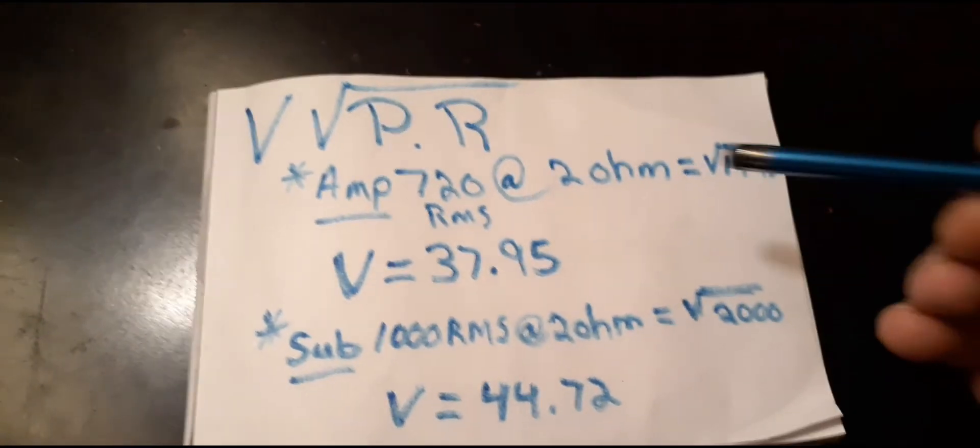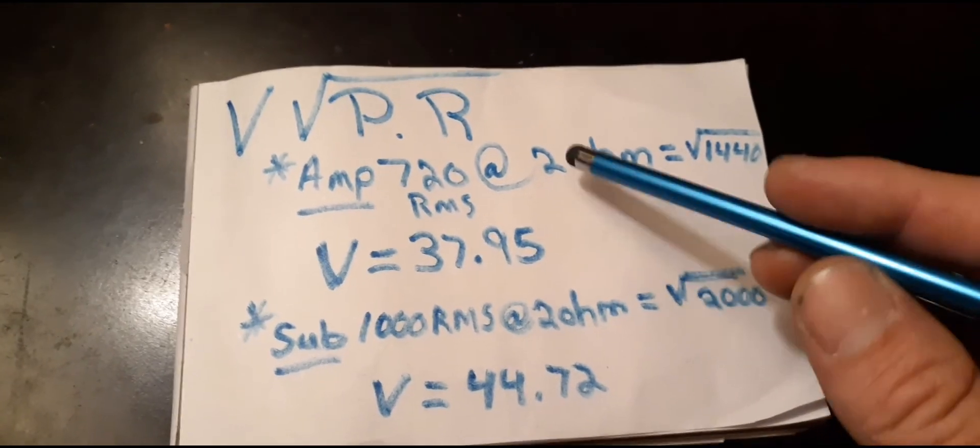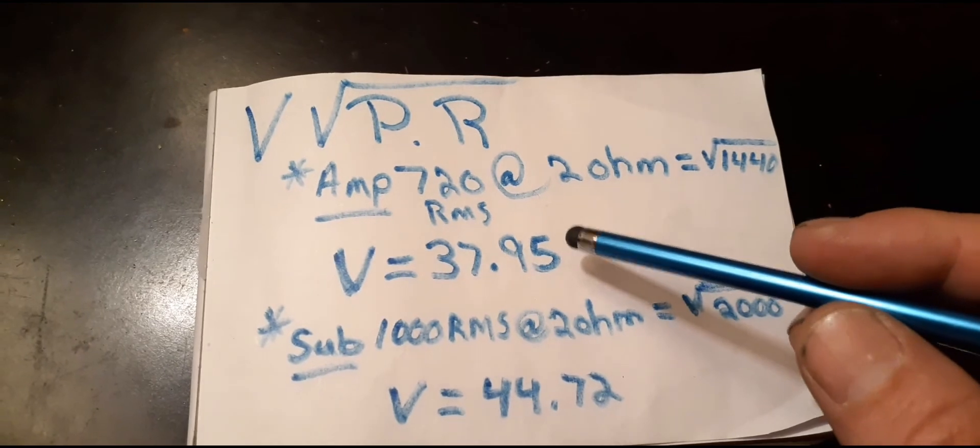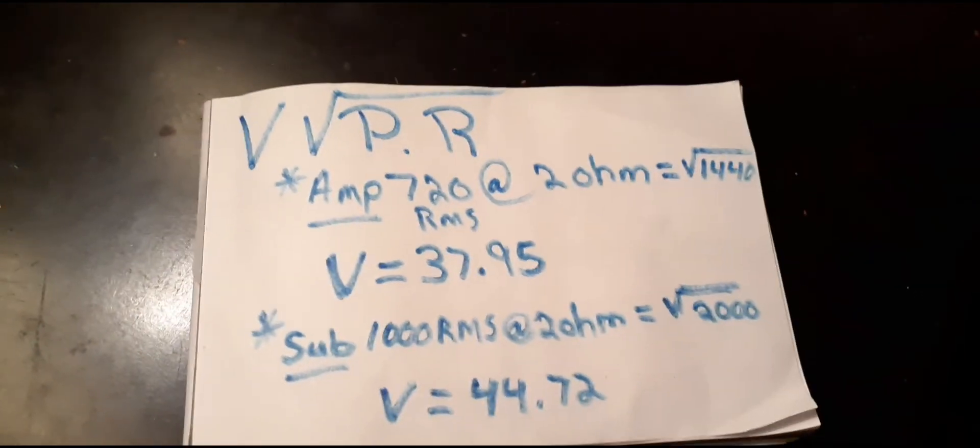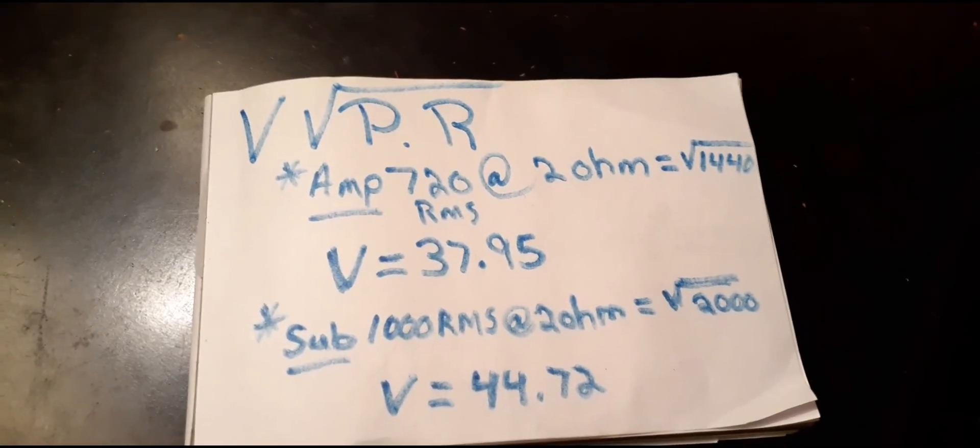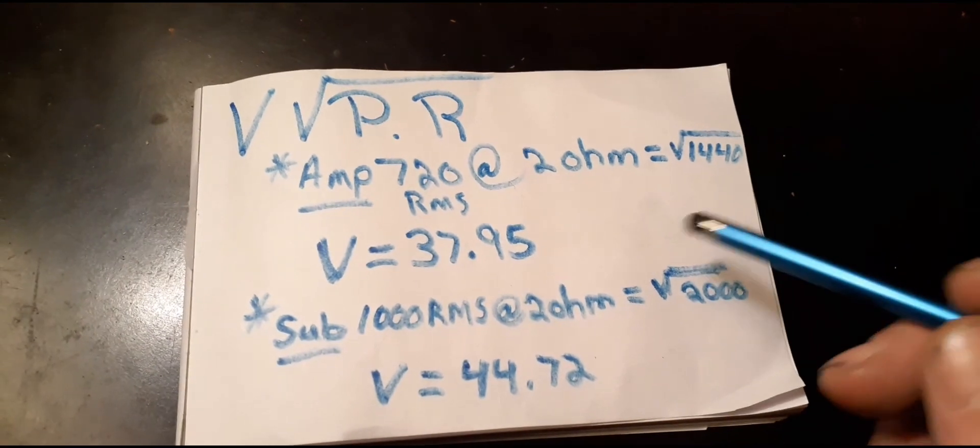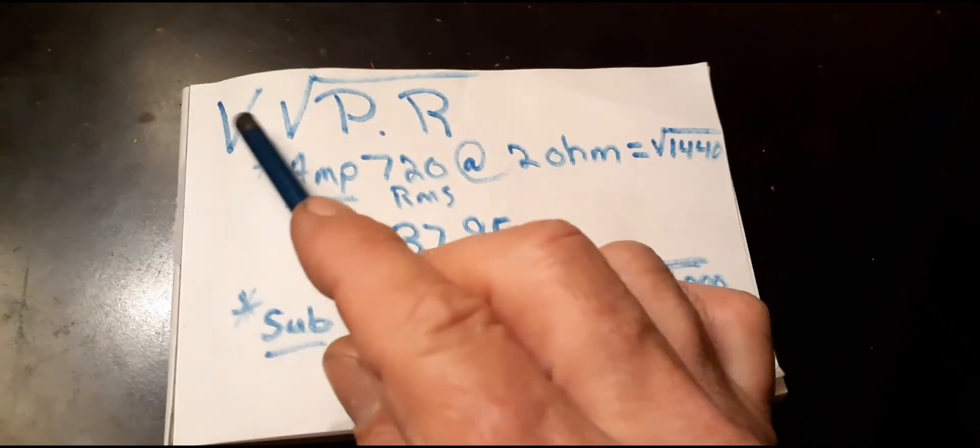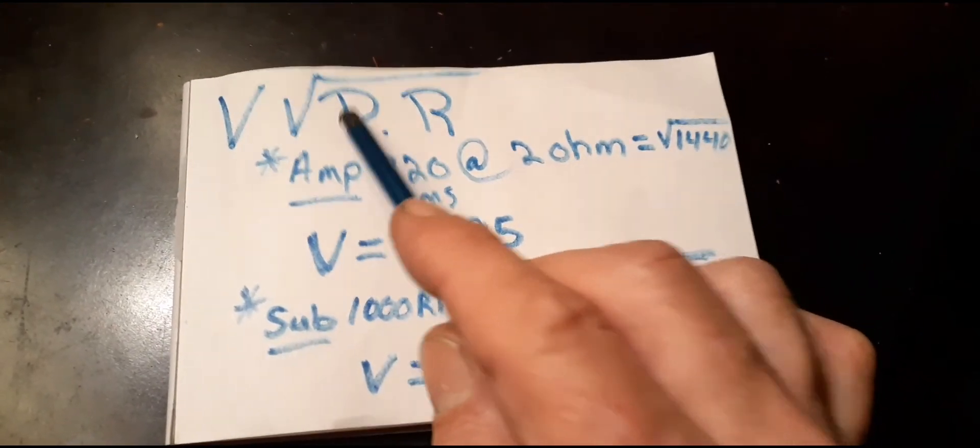Hey guys, I just want to go over real quick how I did get the voltage numbers for my amp gain setting. First of all, you want to get your voltage desired number and you want to get your power times resistance.